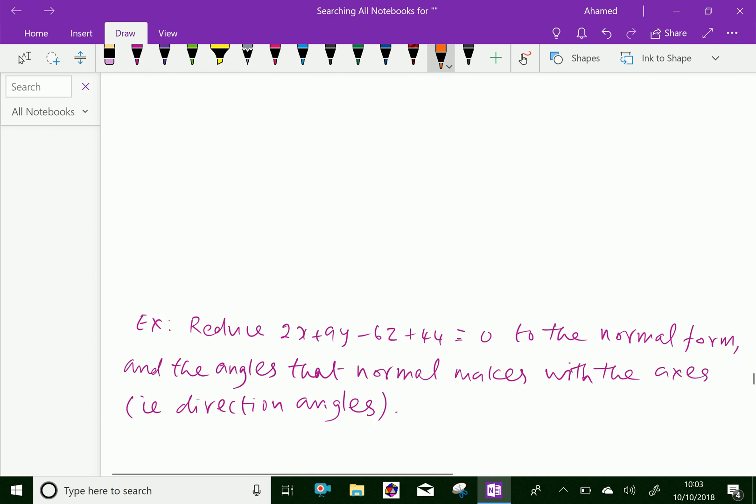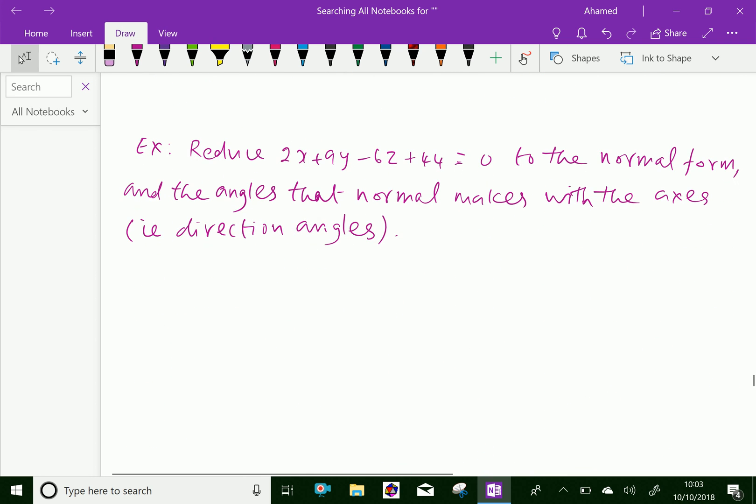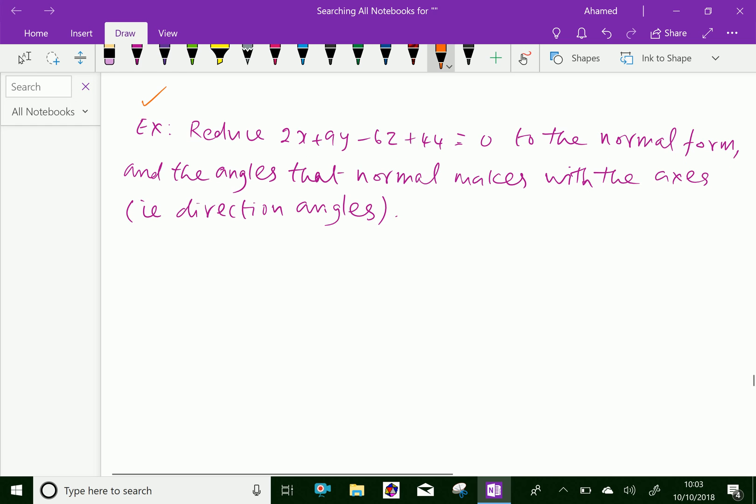Now let us do one more problem. Reduce 2x plus 9y minus 6z plus 44 equals 0 to the normal form and find the angles that the normal makes with the axes, that is direction angles.